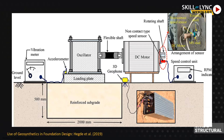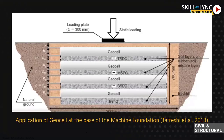The pressure bulb here is not like in shallow foundation or normal deep foundation design — it will be different. One example from a recently published research paper shows the application of geocells at the base of the foundation. People have designed first for static load, then used rubber-soil mixture within the geocell to mitigate vibration from the system — addressing both foundation mitigation and strengthening due to incoming vibratory loads.